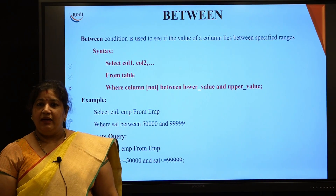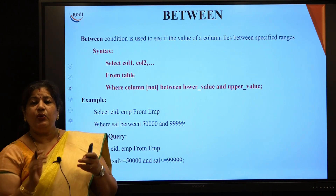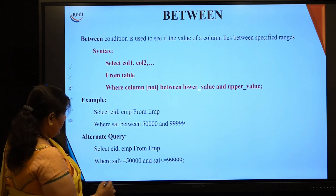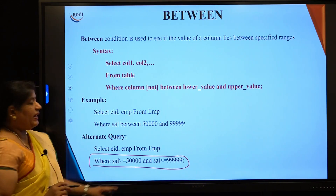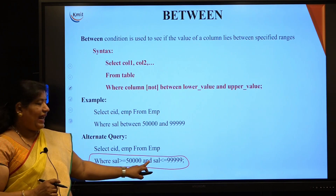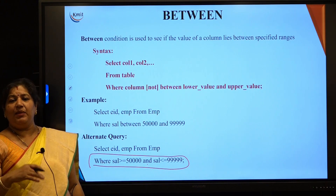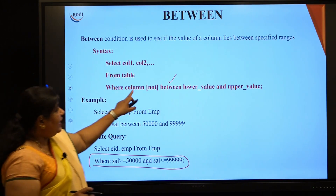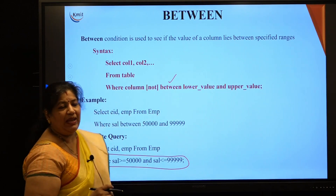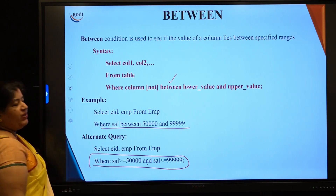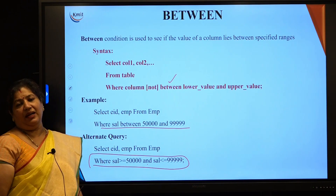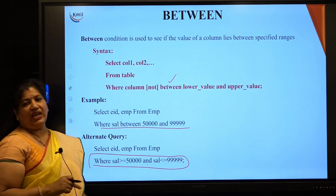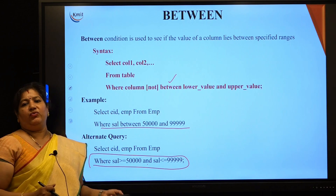The BETWEEN operator is used to compare values within a range. A condition like WHERE salary >= 50000 AND salary <= 99999, which combines two comparisons with AND, can be replaced with BETWEEN. I simply write SELECT * FROM table WHERE column BETWEEN lower_value AND upper_value — both values are included. For example, WHERE salary BETWEEN 50000 AND 99999.